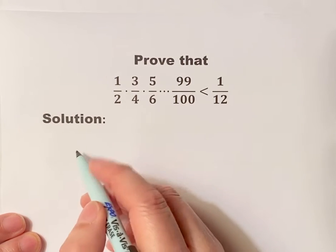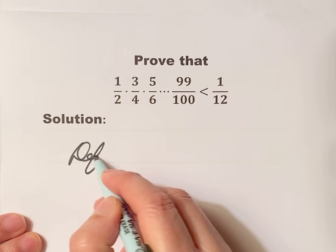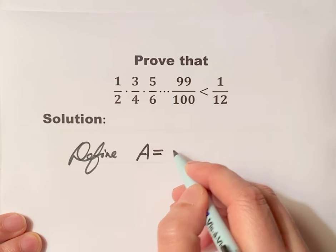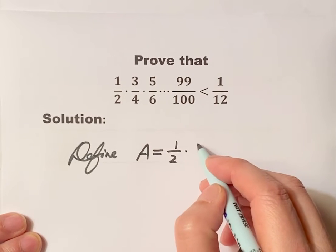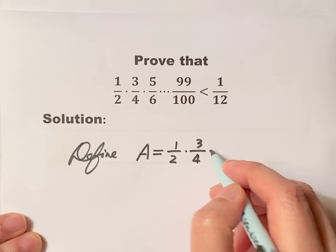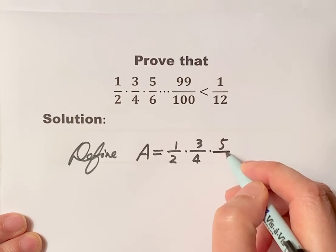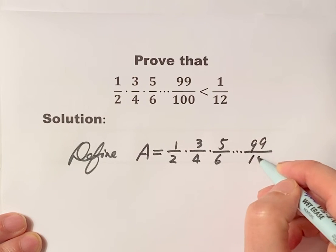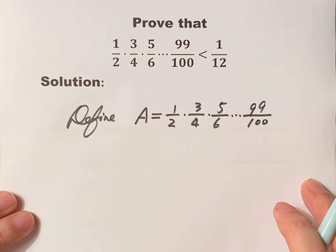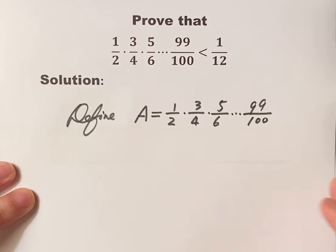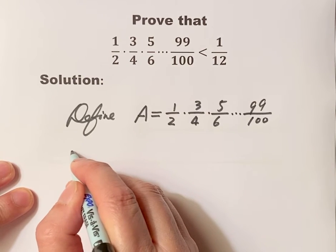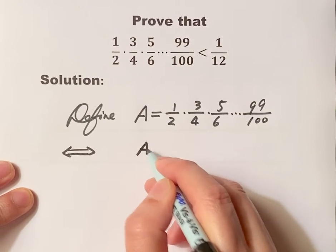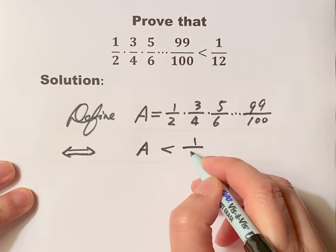Let's define the left-hand side as A equals 1 over 2 times 3 over 4 times 5 over 6 until 99 over 100. It is equivalent to prove A less than 1 over 12.